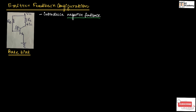Emitter feedback configuration is used to introduce negative feedback into the circuit. It is a method that is used to introduce negative feedback into the circuit.